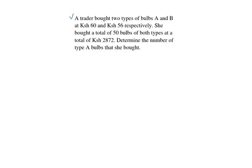So we have type A, let it be A bulbs, plus type B, we let it be B bulbs. So the total number of bulbs is 50.